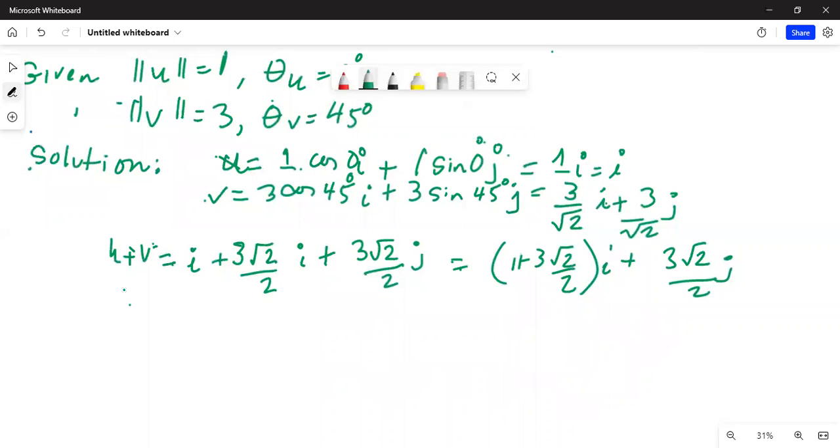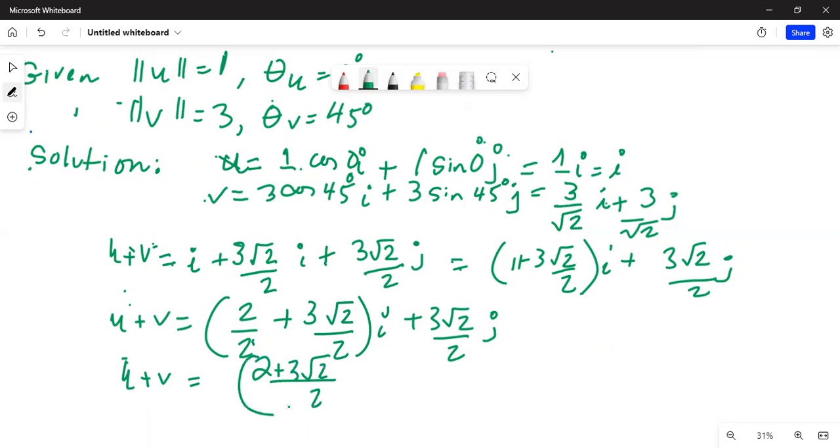We can write u plus v equals, in parenthesis, 2 over 2. So, 1 can be written as 2 over 2 plus 3 square root of 2 over 2 i plus 3 square root of 2 over 2 j. So, u plus v equals 2 plus 3 square root of 2 over 2 in parenthesis i—sorry, that parenthesis is wrong, so let's take care of it in a minute.